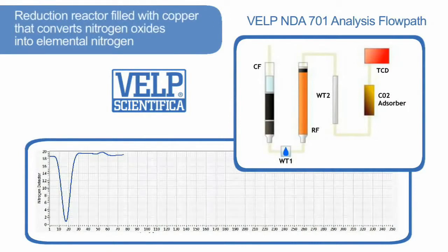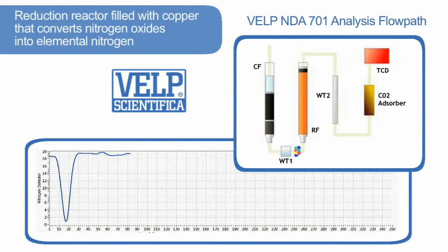The gases pass through the reduction reactor, filled with copper, that converts nitrogen oxides into elemental nitrogen at 650 degrees centigrade.